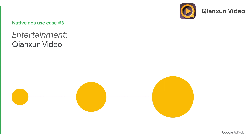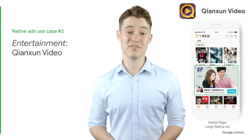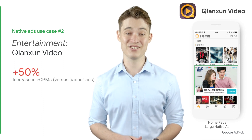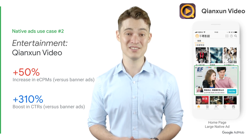Lastly, we have Quanzhun Video, an entertainment app. They wanted to provide the best UX by showing ads in content listings and increasing revenue at the same time. They also wanted to build customized native advanced ads. They did this by employing large native ads to increase overall eCPMs and smaller ones to match content size. Since this customization of native ads was introduced, Quanzhun Video saw a 50% increase in eCPMs and a 310% increase in CTR compared to banner ads.